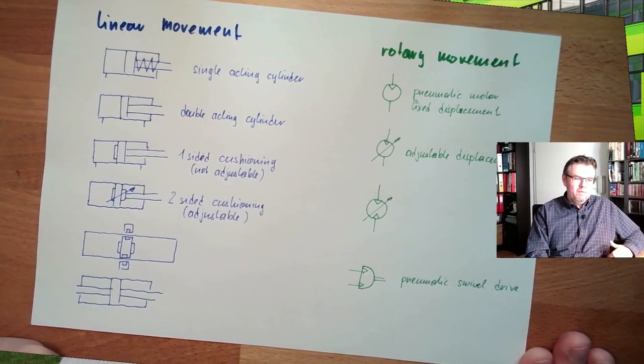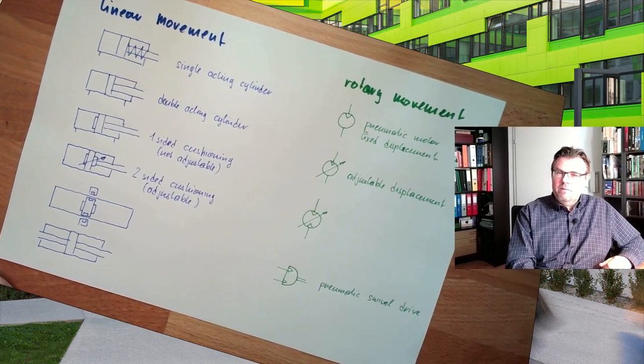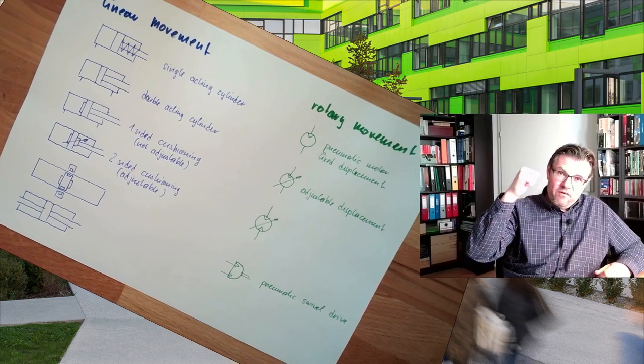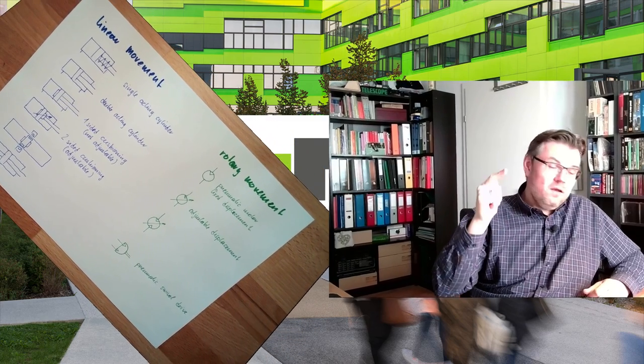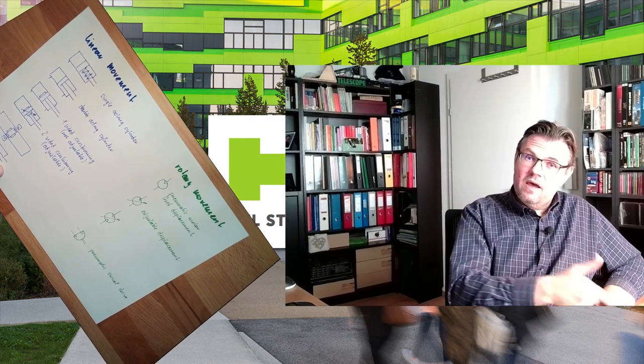And that's it for working elements. Next time we are already talking about control elements. So, now we have produced our energy, power production, then we can use the energy, and now in between we need something which can switch the energy in a certain way that these things, that all these movements, all this work, make sense. And this is then the control elements. What control elements are there, and how they are working, in combination with cylinders and so on, we will see during the next few videos. Next time, introduction to control elements. For this time, thank you very much for listening. Goodbye.